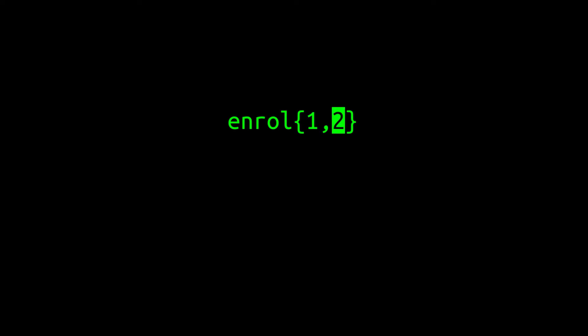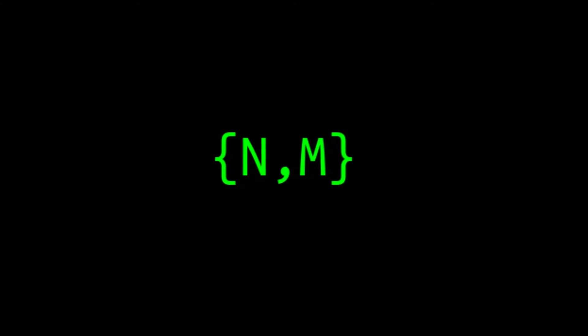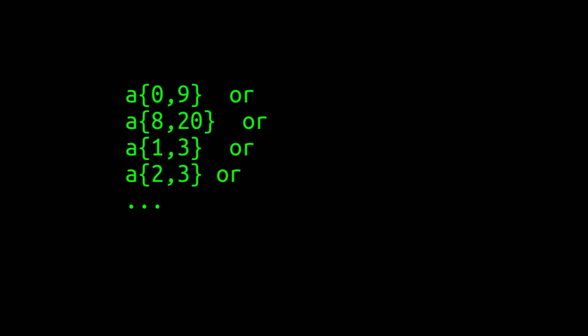If you wanted to change the regex to also match misspellings of the word enroll that don't have any Ls at all, you can do so by decreasing the lower bound of the range to zero. The pattern that this quantifier uses should now be a bit more obvious. Whenever we want to specify that the previous character can be repeated a lower bound of N times up to an upper bound of M times, we can write this quantifier after the character. N and M are placeholders — in reality, you would write something like these examples, or any other pair of positive integers.